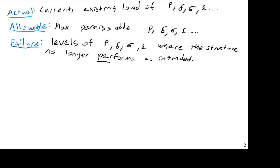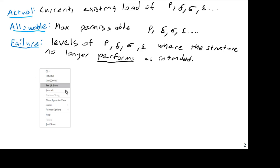For example, a bridge may be deflecting more than we find permissible, or the stress may be beyond the elastic limit. Within the elastic limit, a structure returns to its original state when unloaded; plastic deformation is permanent. Loads can take you outside the elastic limit without causing collapse, though that loading is often undesirable.